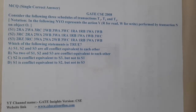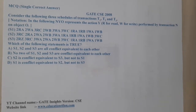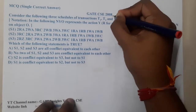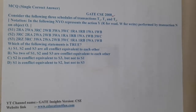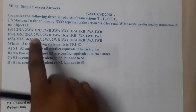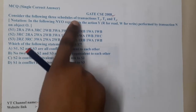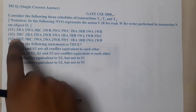Hello guys, we are back with our next lecture. In this lecture, let us go through the next question. This question belongs to GATE CSC 2008. The given question asks us to consider the following three schedulers T1, T2, T3.